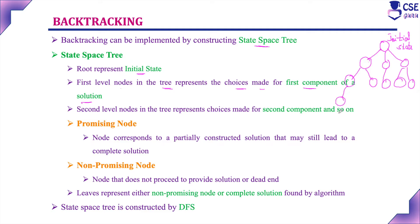We can consider any level, but each next level should provide a feasible solution. There are two types of nodes in a state space tree: promising nodes and non-promising nodes. A promising node corresponds to a partially constructed solution that may still lead to a complete solution — considering its descendants leads toward a complete solution. A non-promising node is one that does not proceed to provide a solution or has reached a dead end where we cannot proceed further.